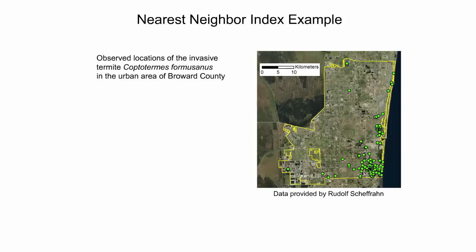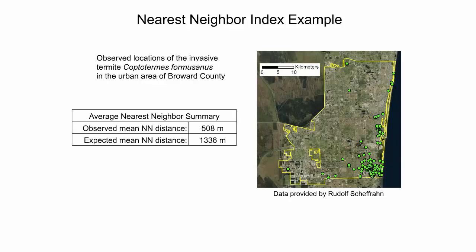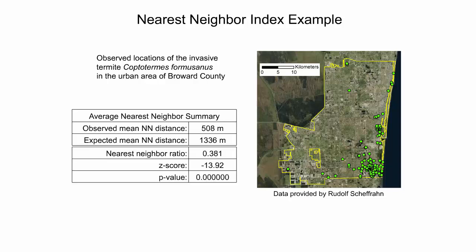The application of the nearest-neighbor index can be illustrated in an example. This map shows observed locations of the invasive termite Coptotermes formosanus in the urban area of Broward County, Florida. The summary of the nearest-neighbor analysis is provided in the table. The observed mean nearest-neighbor distance is shorter than the expected for a random point pattern. The nearest-neighbor index expressed as a ratio is 0.381, indicating clustering, which is significant since the z-score is below negative 1.96.